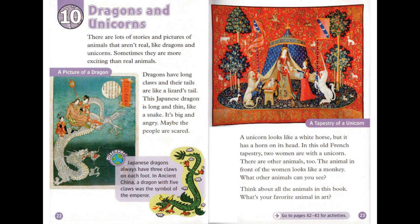Chapter 10: Dragons and Unicorns. There are lots of stories and pictures of animals that aren't real, like dragons and unicorns. Sometimes they are more exciting than real animals. Dragons have long claws, and their tails are like a lizard's tail. This Japanese dragon is long and thin, like a snake. It's big and angry — maybe the people are scared. Japanese dragons always have three claws on each foot. In ancient China, a dragon with five claws was the symbol of the emperor.